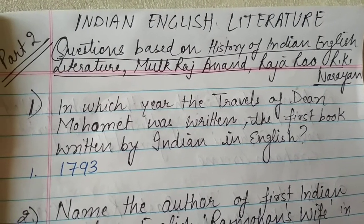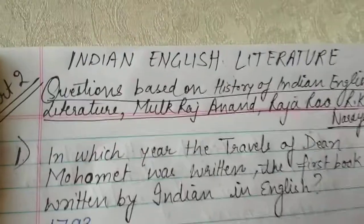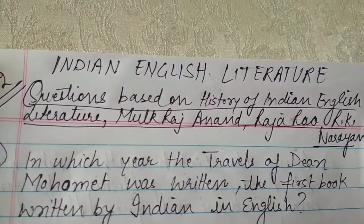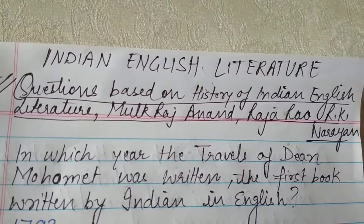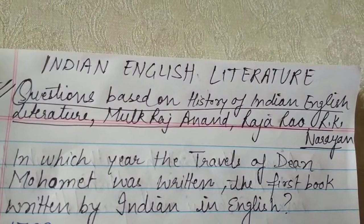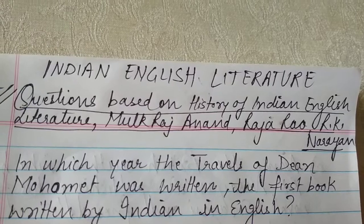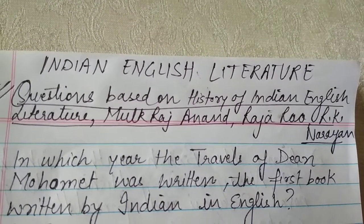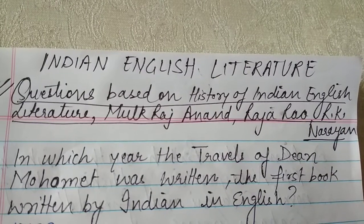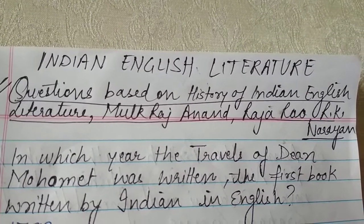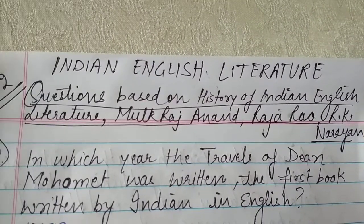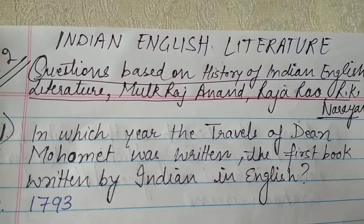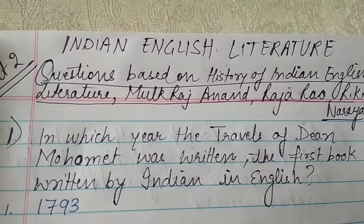The first question: in which year was 'Travels of Dean Mahomet' written? This is the first book written by an Indian in English. It was written by Sake Dean Mahomet and published in the year 1793.